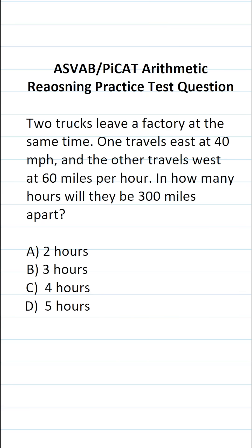This arithmetic reasoning practice test question for the ASVAB and PiCAT says two trucks leave a factory at the same time. One travels east at 40 miles per hour and the other travels west at 60 miles per hour. In how many hours will they be 300 miles apart?